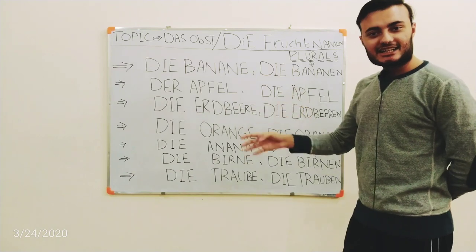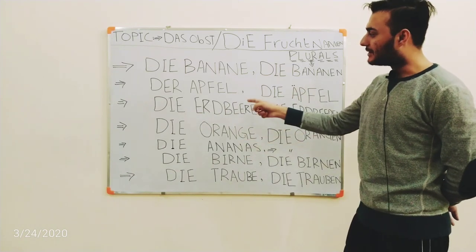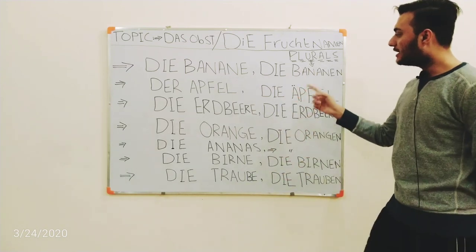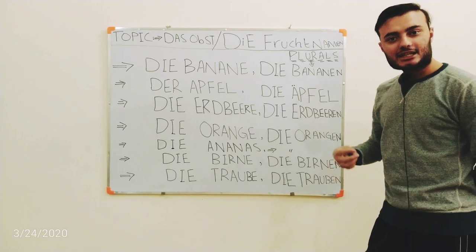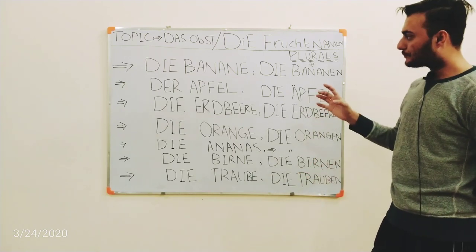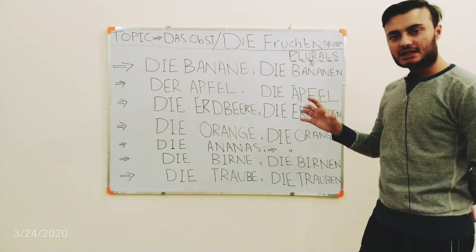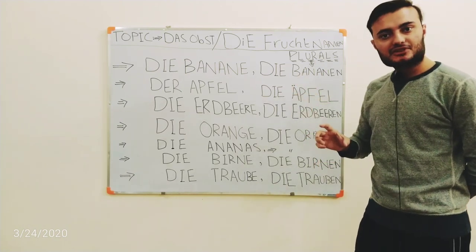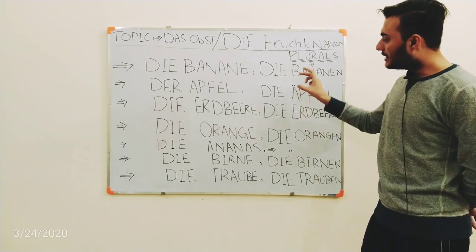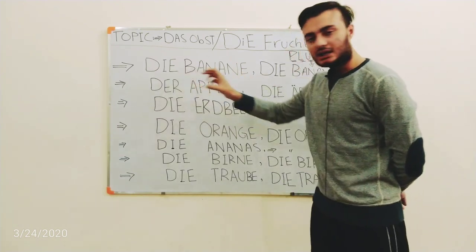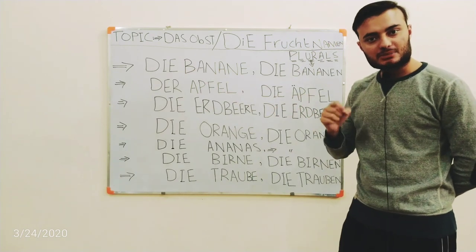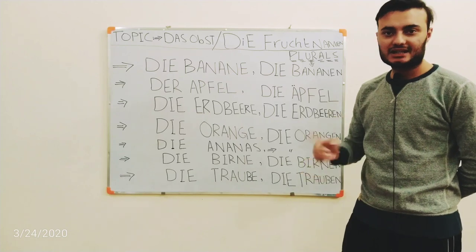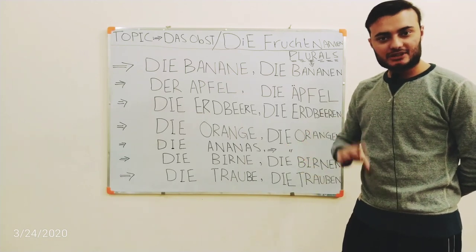Next one is 'der Apfel' — the apple. Its plural will be 'die Äpfel.' As I told you before, and I should repeat once more: every plural will be represented with the form 'die.' This is also 'the' in German. There are a few types of 'the' unlike English — in English we just say 'the' and it's for all.